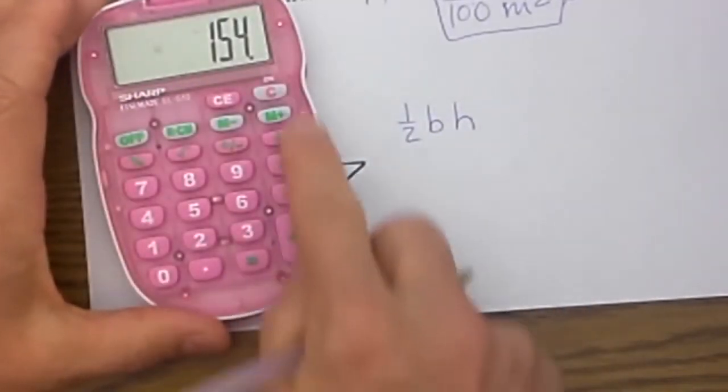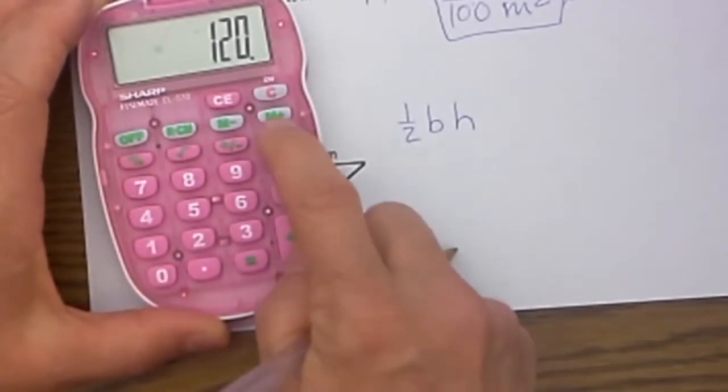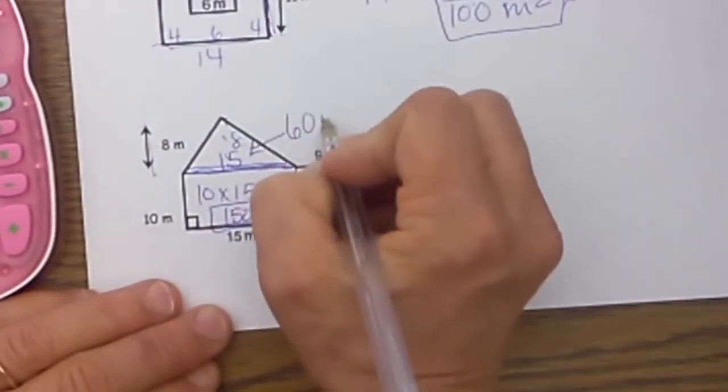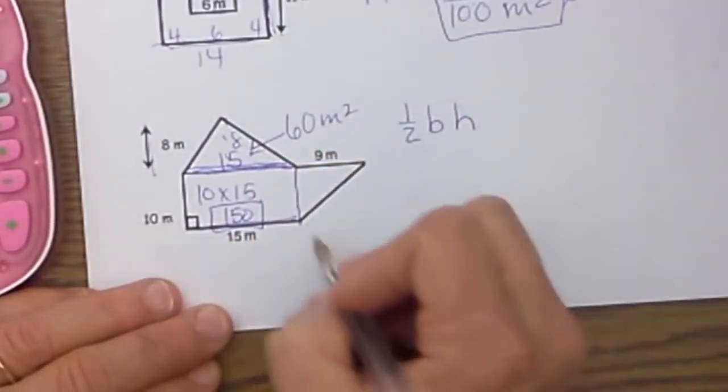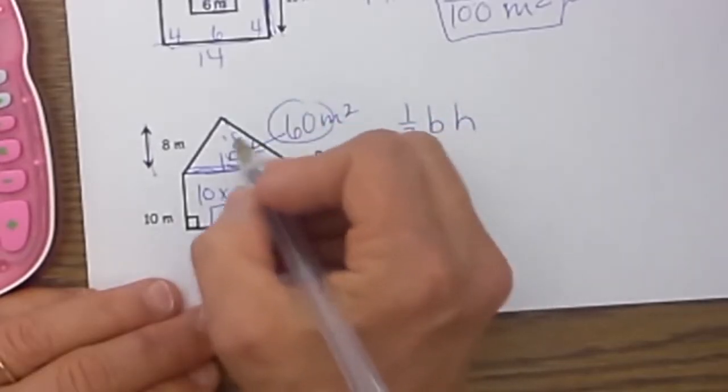Let's multiply that out. We have 15 times 8 and then we divide that by 2 to multiply by half. It is the same as dividing by 2. That section is 60 square meters. We have 150 for the bottom and 60 for this top part.